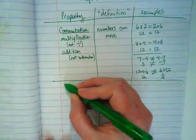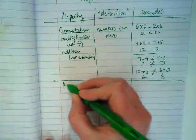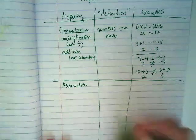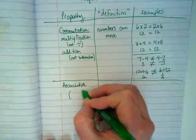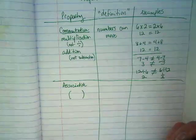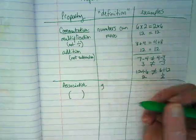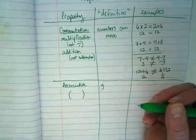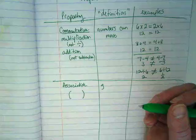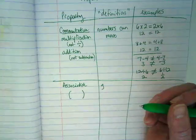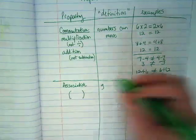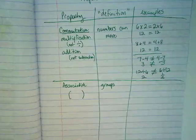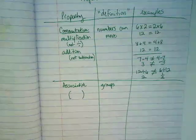Our next property is associative. Whenever I think of associative, I think of parentheses. The associative property comes from the same root that created the word associate. Who are the people that you associate with? The people you hang around. So this is all about groups - we can group numbers that work better together.